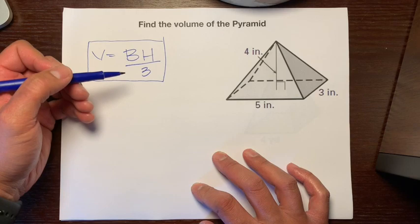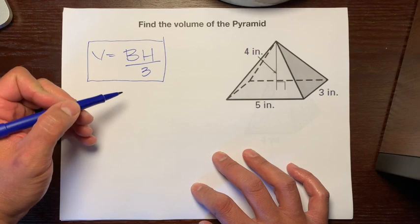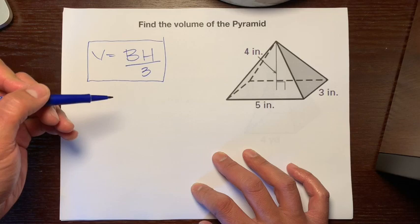And if you guys, one way to remember this is, if you remember, that volume is always the number of cubes. And what number represents cubes? Three. So we divide by three for cubes. So number of cubes that fit inside.